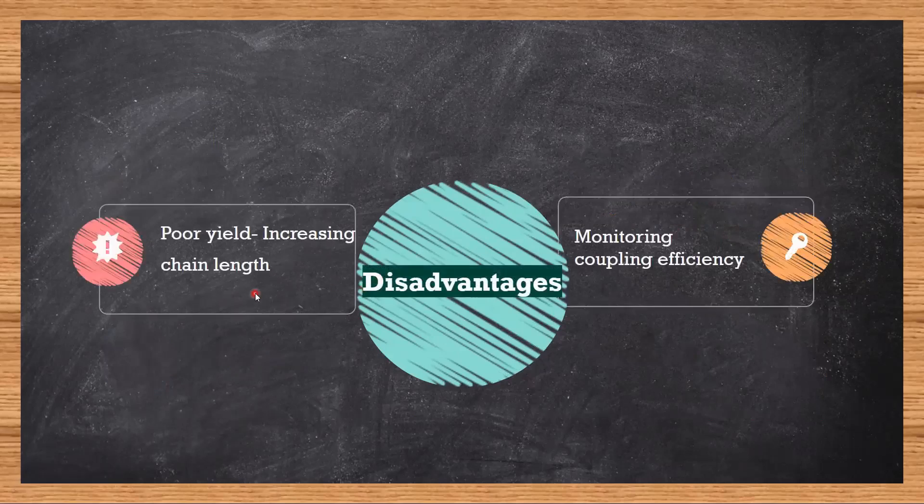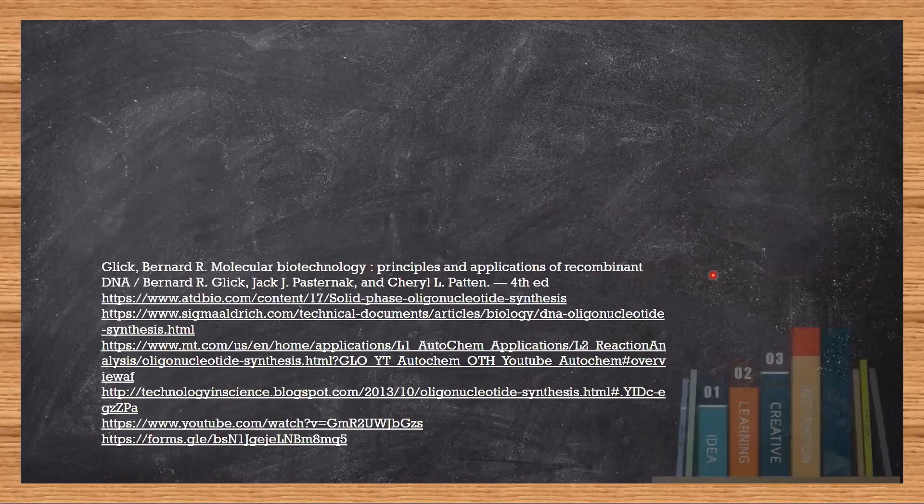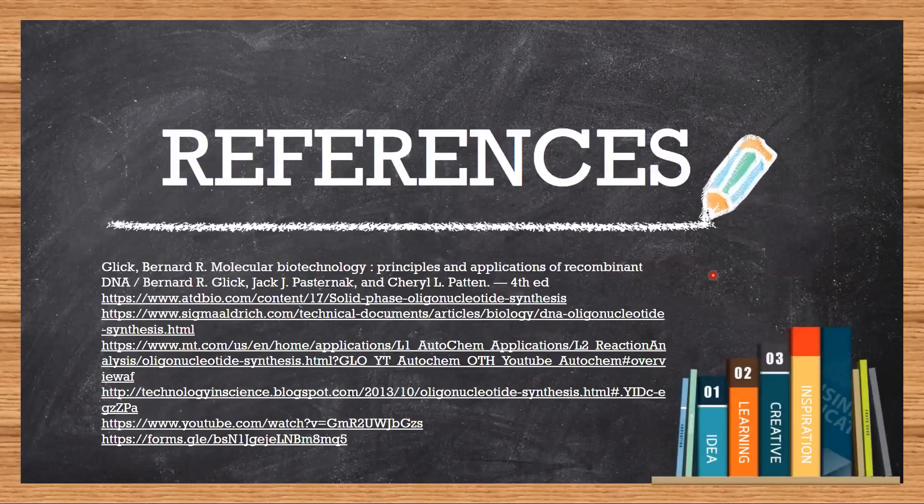But there are some disadvantages. When you want to make higher oligonucleotides, the yield goes on decreasing. So higher the length of the nucleotide, more will be the decrease in yield. And finally, it is very difficult to monitor the efficiency, that is how efficiently each step is carrying out, how efficiently bases have been added. The real-time monitoring is difficult.